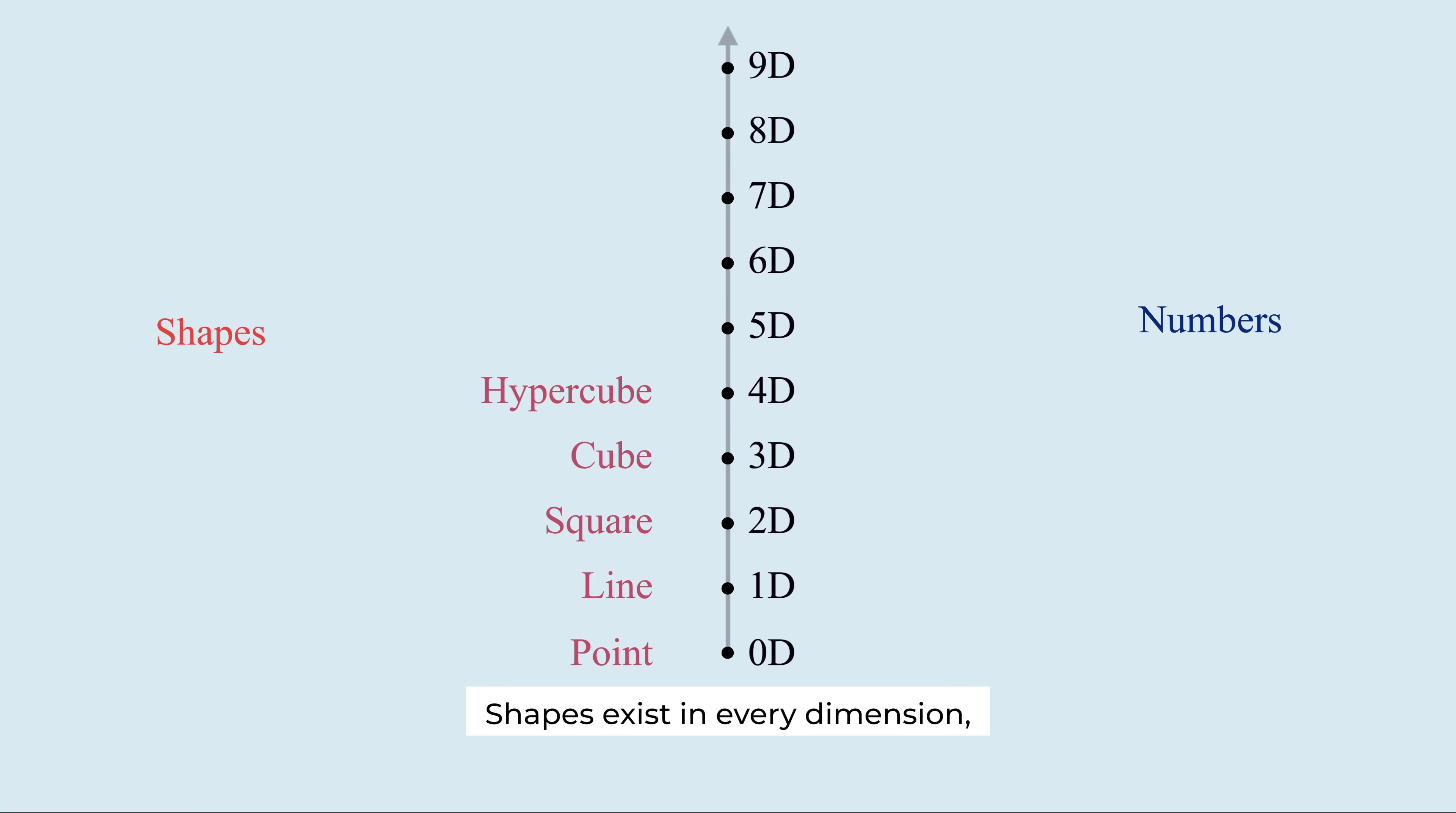Shapes exist in every dimension, but numbers do not. This is where the symmetry between shapes and numbers breaks apart.